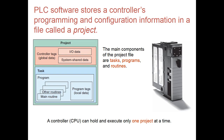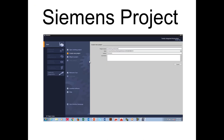A PLC software stores the controller's program, and a CPU can execute only one project at a time. When we start a new project, we assign a CPU to it. For Allen-Bradley, the project file contains tasks, programs, and routines — these are what we use to schedule. Once you create the project, you add a CPU to it, and the CPU runs that one project at a time. When the project is created you get a tree structure that contains all the functions.